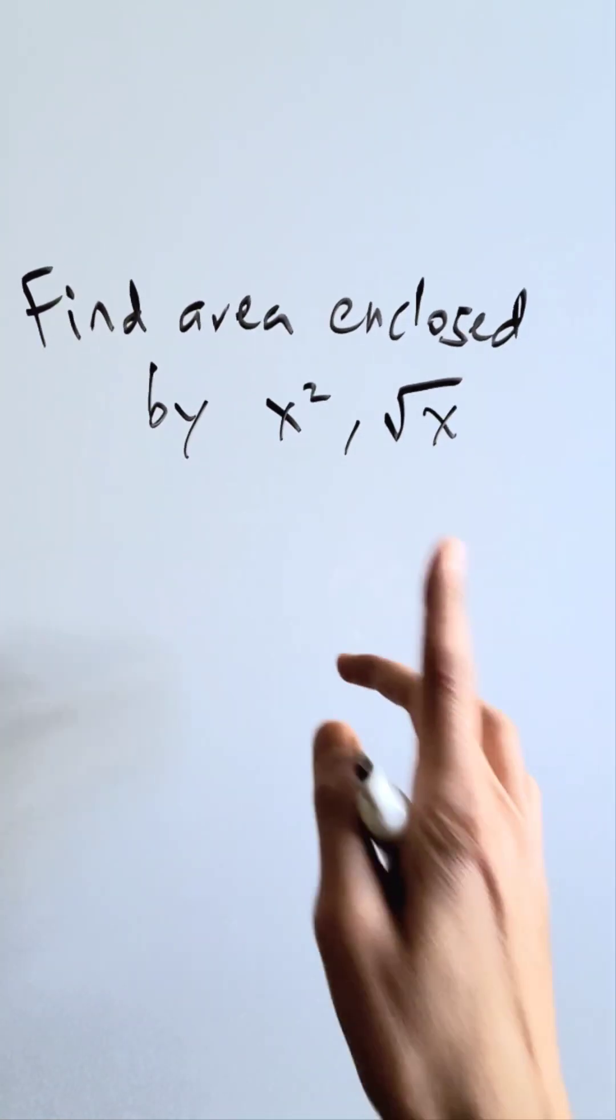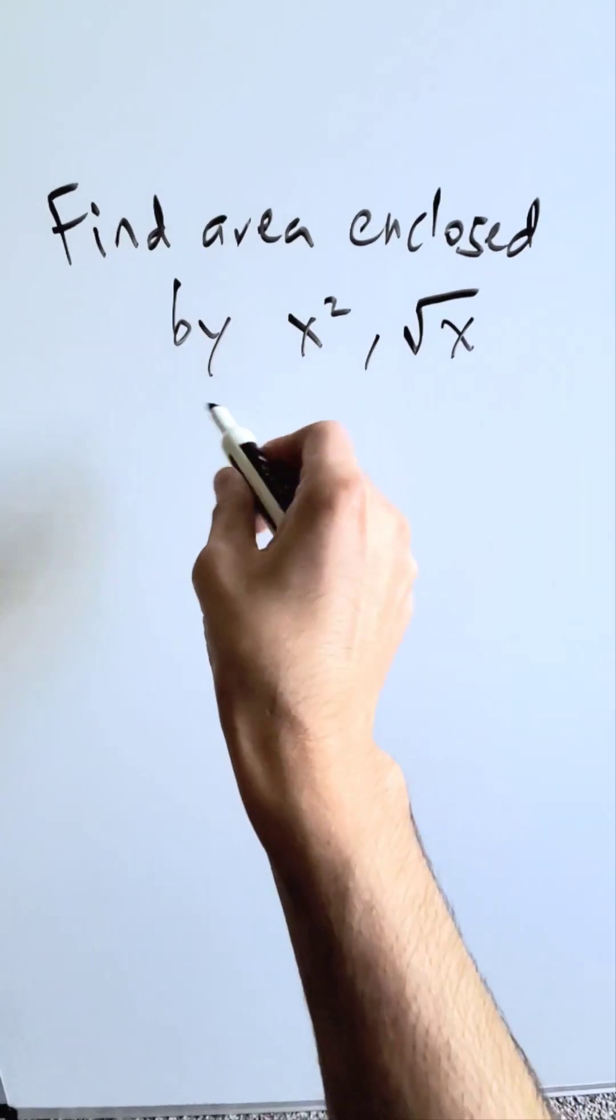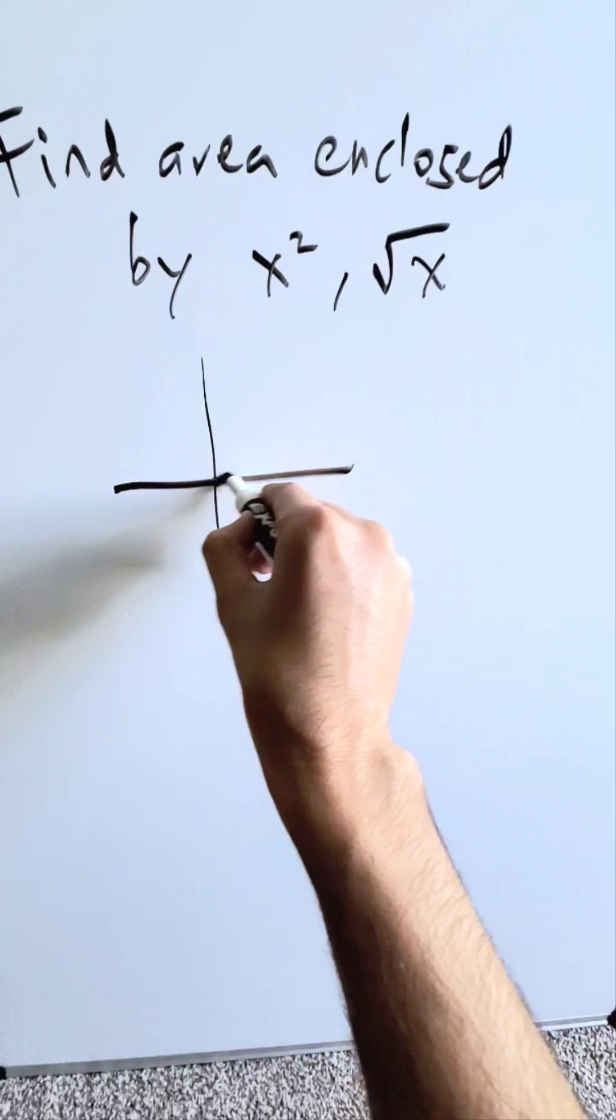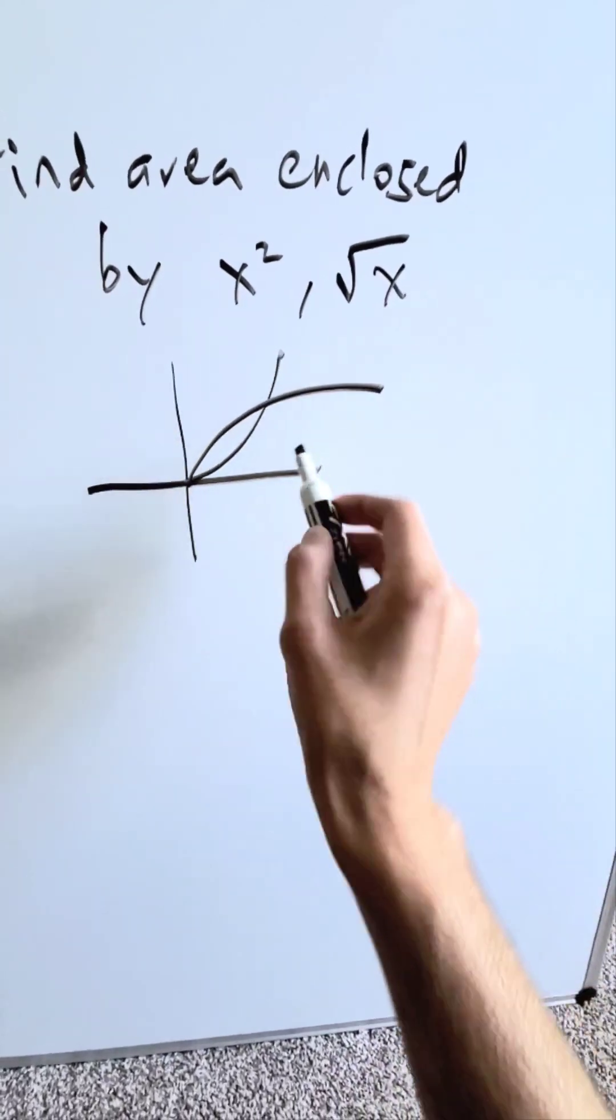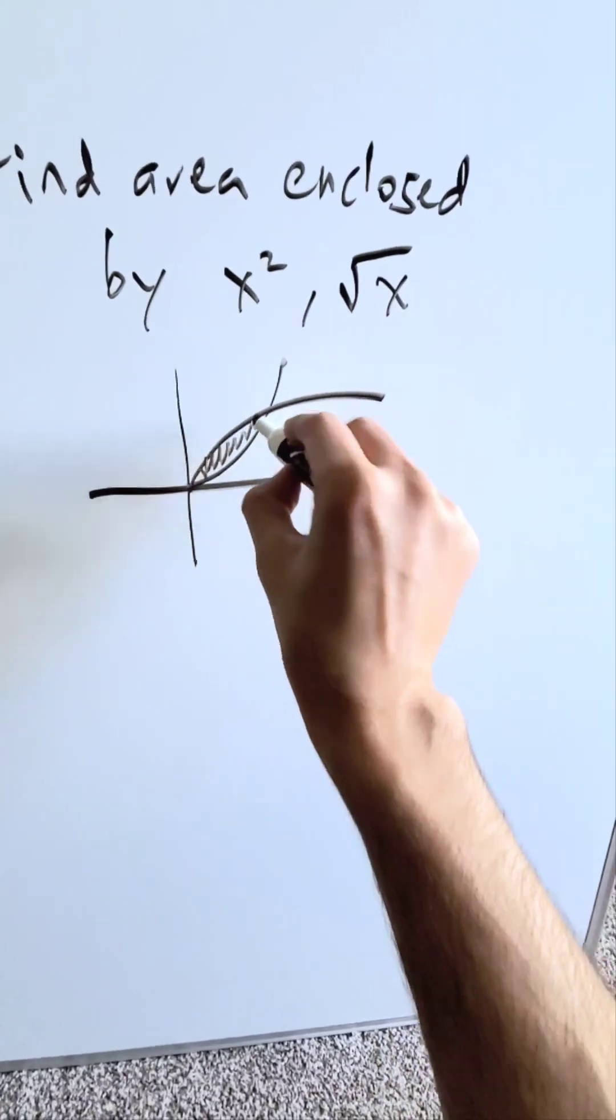Let's find the area enclosed by both of these functions, x² and √x. Let's graph it out. I'm looking at x² which looks something like that, and √x like that, and the area enclosed is that.